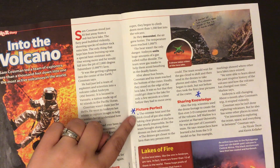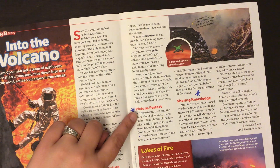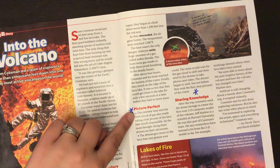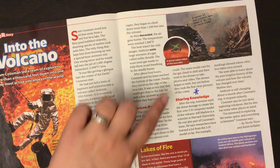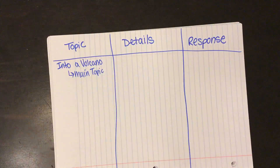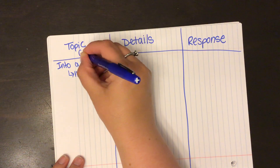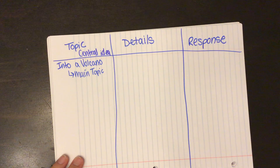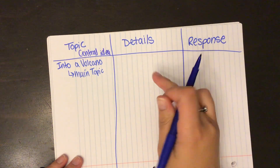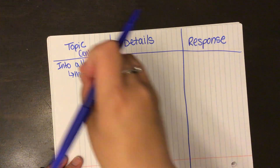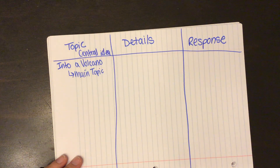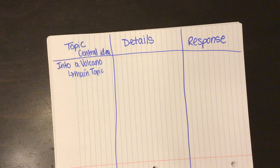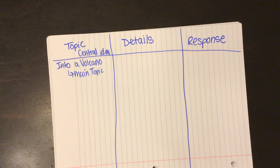On the first paragraph, first couple of sentences, this is where you're going to find your central idea. Then you're going to find details to back it up. Remember, your topic — this right here — is called central idea: what it is mainly about, what it's centered about. Your details have to back up your central idea. And then your response is going to be any connection that you have, anything that it reminds you of, any other story that you may have read.